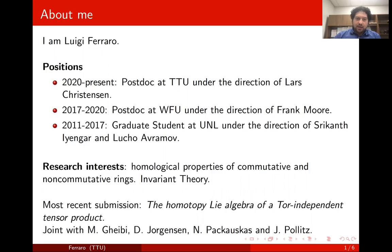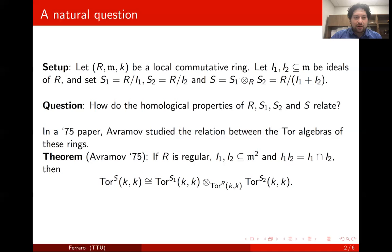Let me start with a bit of history. First, the setup. We have a commutative local ring R with maximal ideal M and residue field K. We have two ideals I₁ and I₂ in M. We define S₁ to be the quotient ring R modulo I₁, S₂ is the quotient ring R modulo I₂, and S is their tensor product over R. A natural question is how the homological properties of these four rings relate.